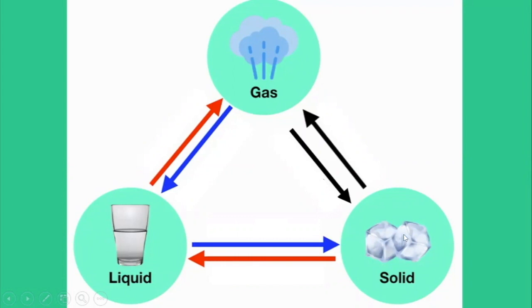First one: if we have solid and we want to get liquid — from solid to liquid — do you remember the name of this physical change? If we have solid ice, for example, we increase temperature and we get liquid. The name of this physical change is melting. When some solids are heated until a certain level, they may change their state from solid to liquid, and we call this physical change melting.